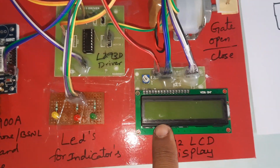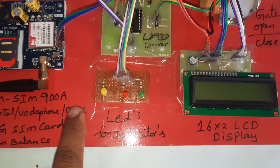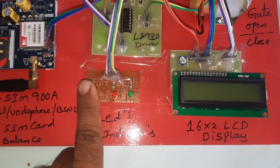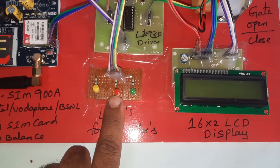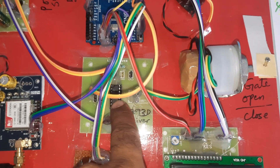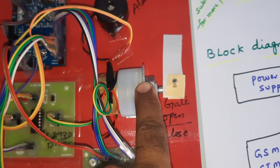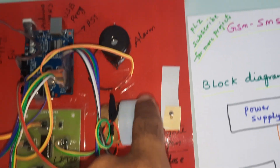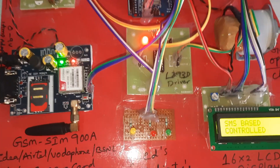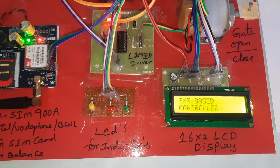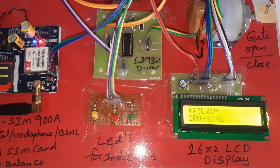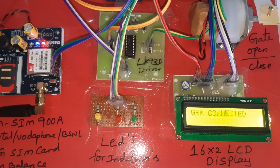Pins 8, 9, 10, 11, 12, 13 connect to the 16x2 LCD display. Pins 2, 3, 4 are for LED indicators — SMS indicator, gate open/close time, and open time LED indicator. L293D driver IC handles the gate open/close system along with one alarm. Now I am giving the power supply for the GSM SMS Based Railway Gate Crossing Control System testing.